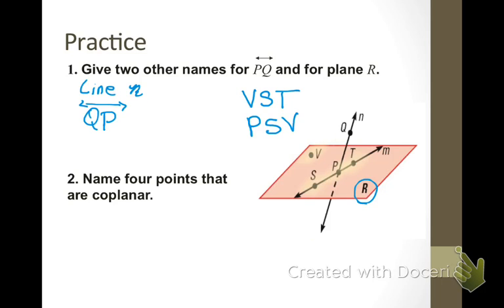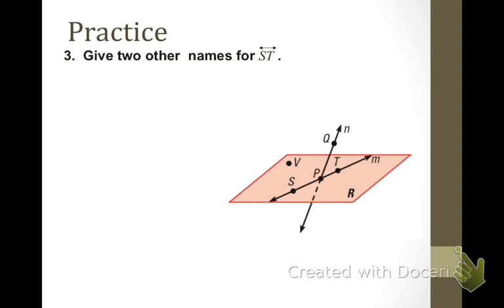Name four points that are coplanar. So, that would be points on the plane. And I actually have them highlighted. It is V, S, P, and T. Notice that Q is up here on a line hovering above the plane, so it is not coplanar.